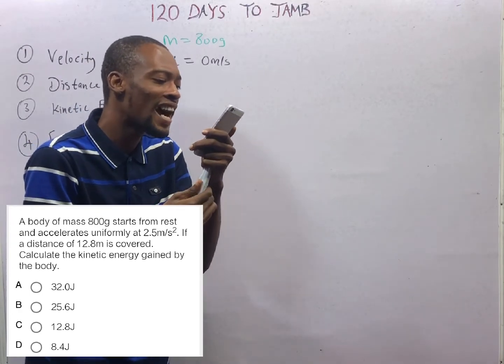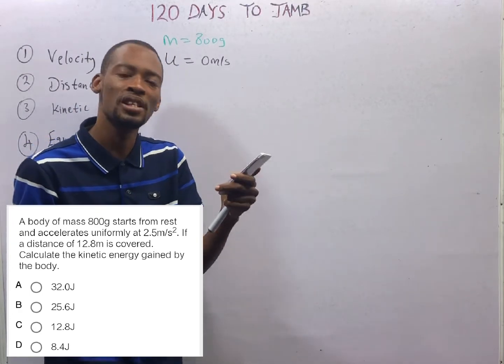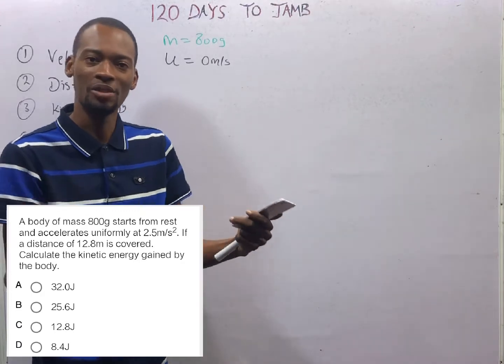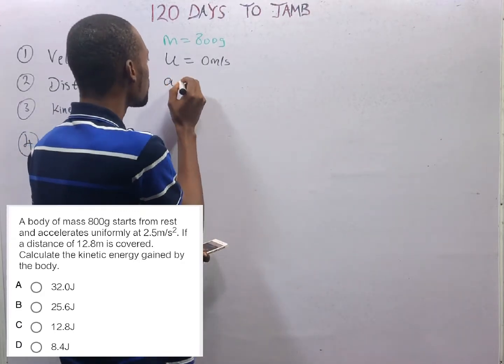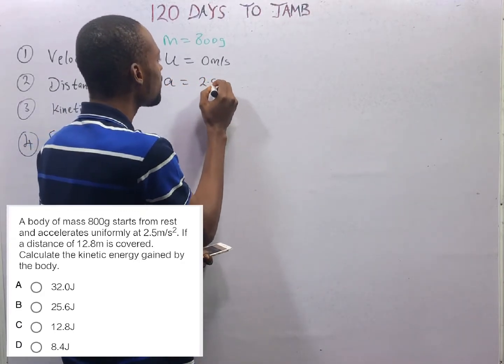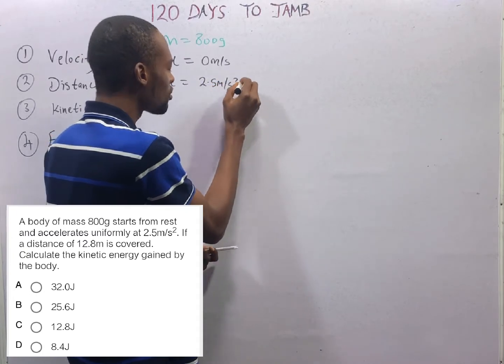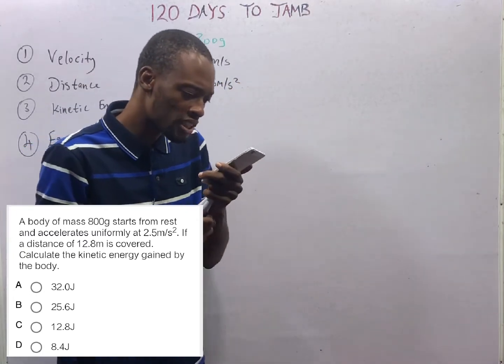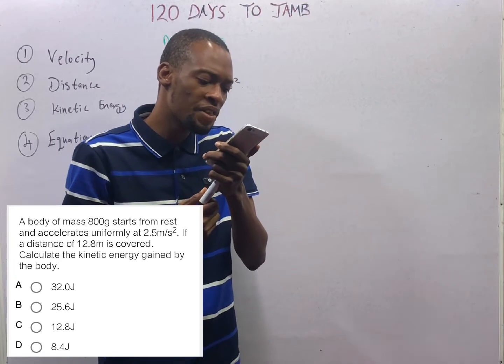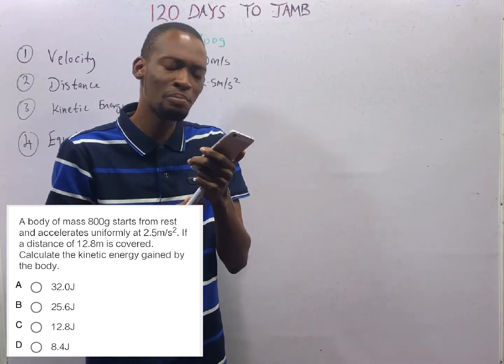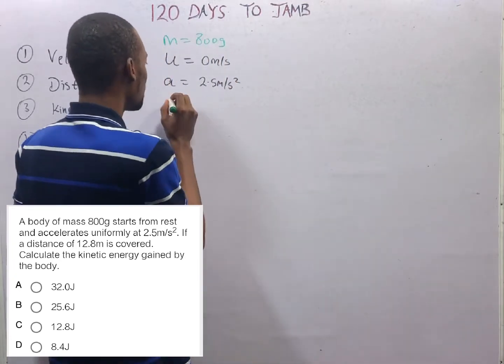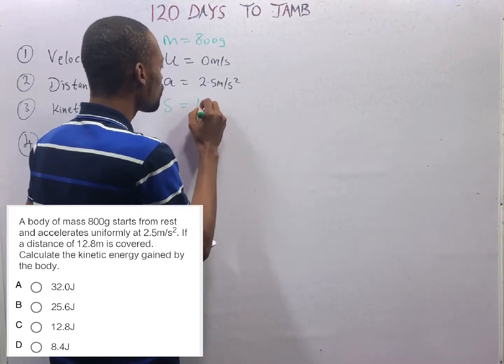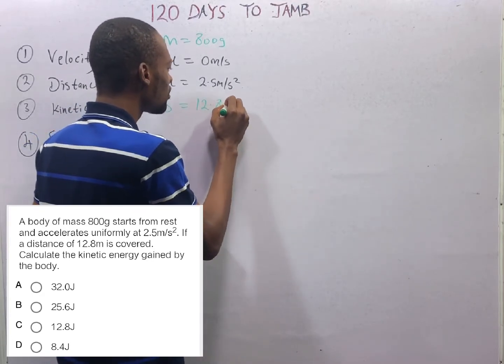Accelerates uniformly at 2.5 meters per second squared. So a = 2.5 m/s². What else? If a distance of 12.8 meters is covered, s = 12.8m.